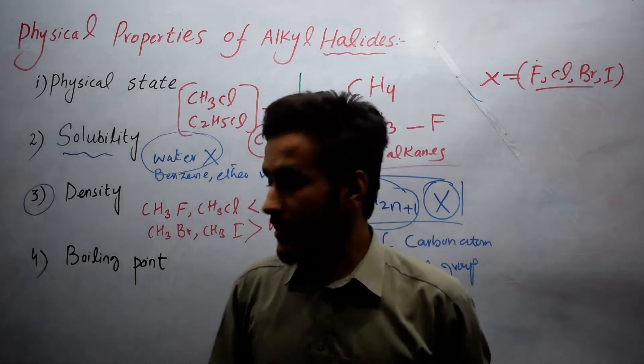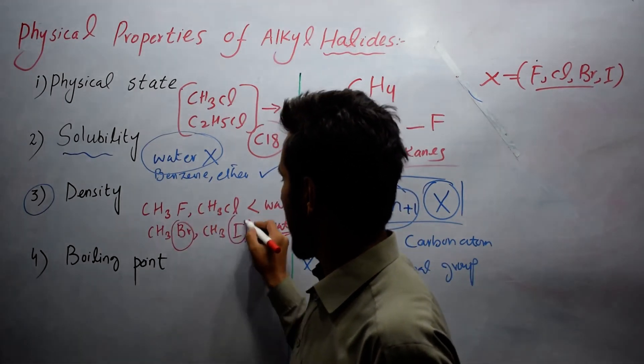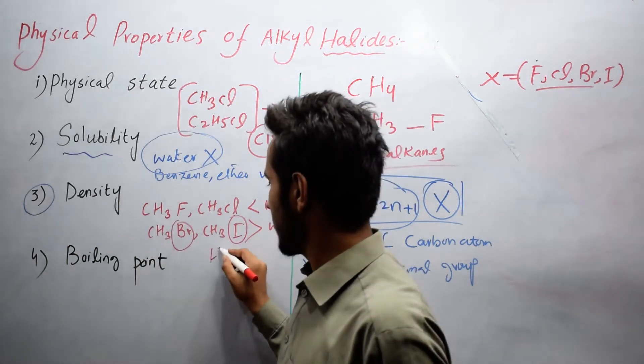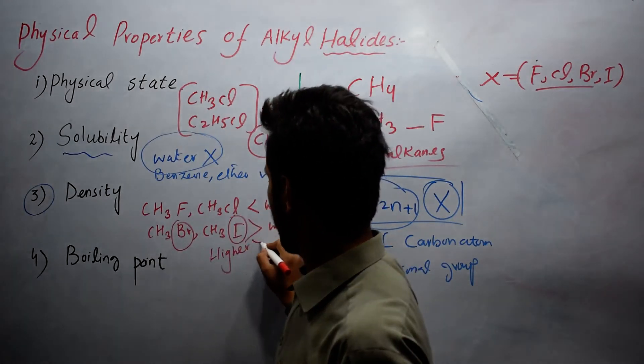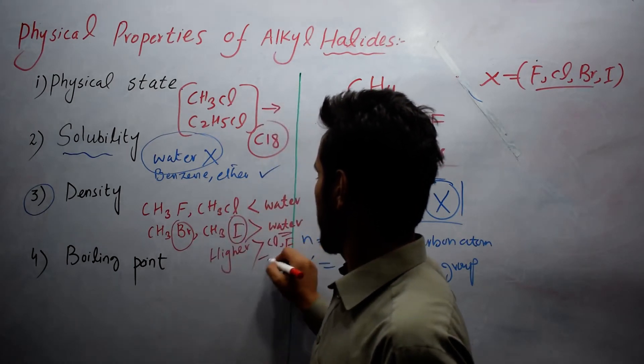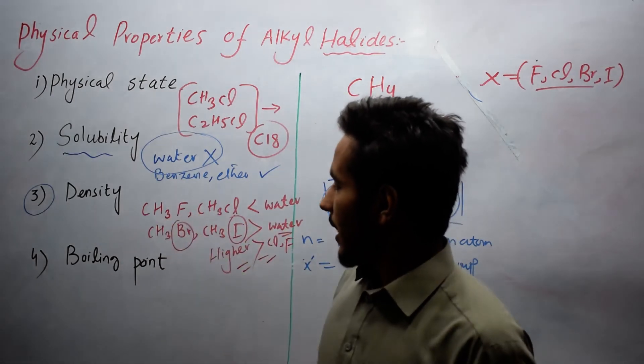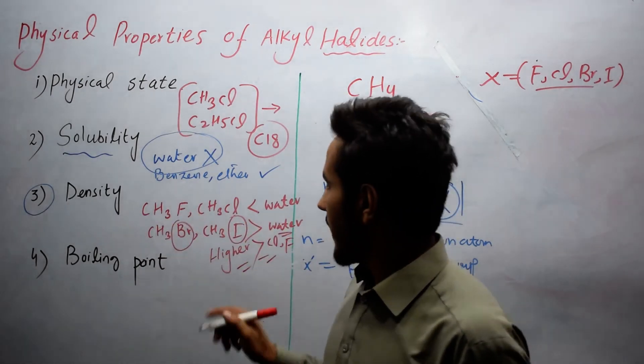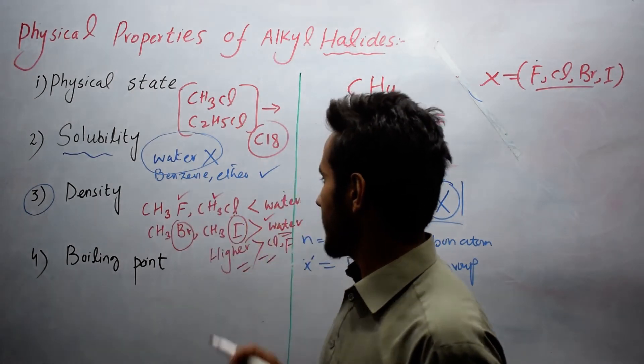The main reason is the atomic mass of bromide and iodine is higher as compared to the density of chlorine and fluorine. That's why the density of alkyl bromide and alkyl iodide is higher than water, while alkyl fluoride and alkyl chloride is less than water.